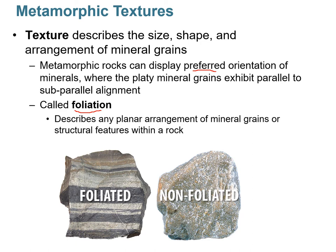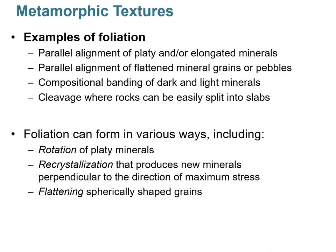Here are two examples: a foliated metamorphic rock showing clear mineral bands where minerals have segregated into discrete layers, and a metamorphic rock that shows no foliation. So there are two types: foliated and non-foliated. Foliation can appear as parallel alignment of platy minerals like micas, flattening of mineral grains or pebbles as in a meta-conglomerate, compositional banding, or the ability to split into thin slabs when microscopic chlorite minerals form in parallel.